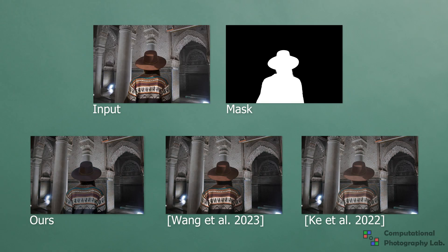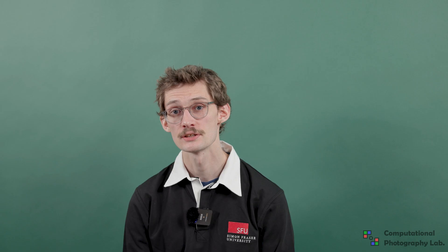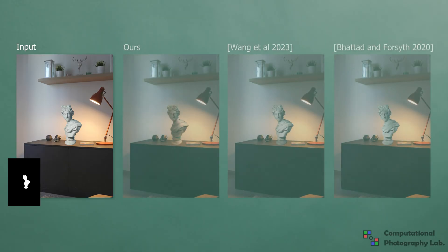Most prior image harmonization methods only apply simple color edits, limiting their realism. While there are methods for harmonizing the illumination, they fall short in terms of realism as they do not fully model the relighting problem. With our approach formulated in the intrinsic domain, we can generate realistic composites for a wide range of scenes.